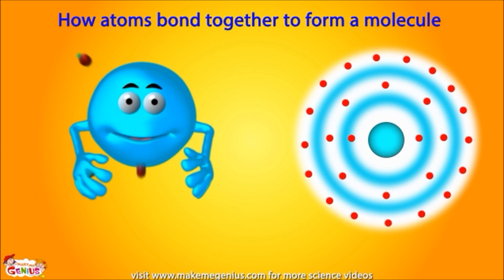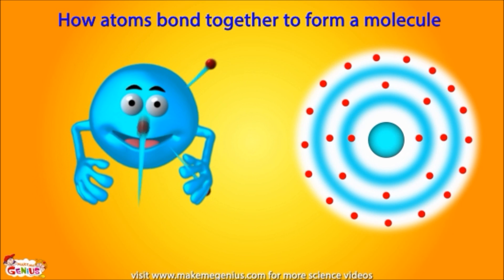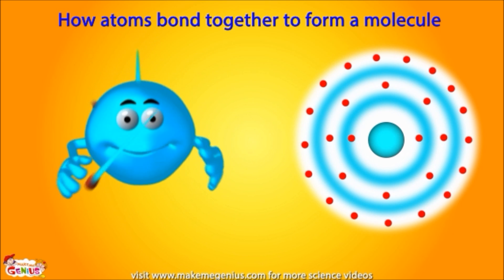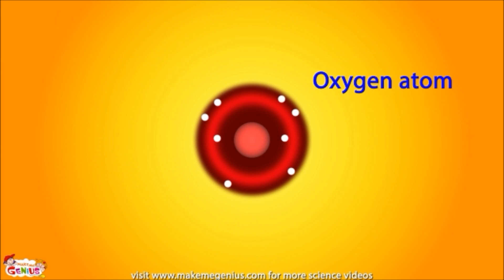Remember one thing: atoms always keep trying to fill their shells. Take, for example, an oxygen atom. In its second shell, it can hold up to eight electrons, but the oxygen atom only has six electrons in its second shell, so it is always looking for more electrons to fill its shell.